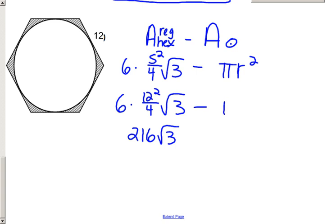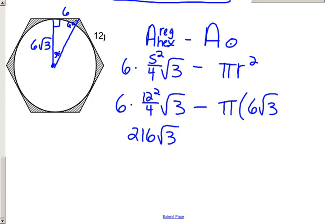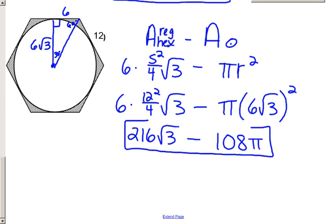For the circle, we use pi r squared, where the radius of the circle is the apothem of the hexagon. Drawing in the apothem — which is perpendicular and bisects the side — and the radius creates a 30-60-90 triangle. With the 60-degree angle at the vertex and 30 degrees at the center, if the whole side is 12, then half the side is 6, making the apothem 6 root 3. That is the radius of the circle, so we compute pi times (6 root 3) squared, giving an area of 108 pi. The shaded region is 216 root 3 minus 108 pi units squared.